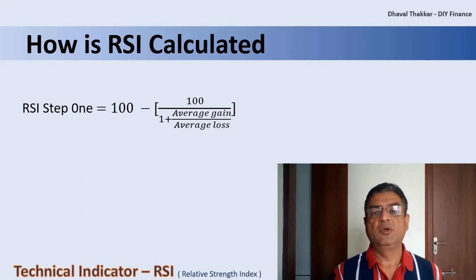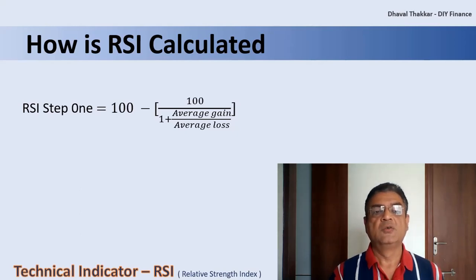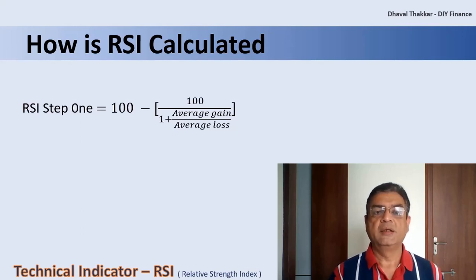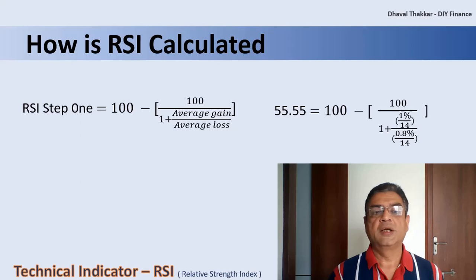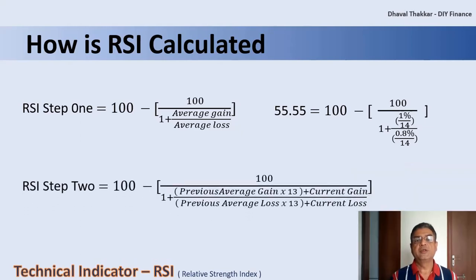The standard number of periods used to calculate the initial RSI value is 14. For example, imagine the market closed higher 7 out of the past 14 days with an average gain of 1%, and the remaining seven days all closed lower with an average loss of -0.8%. Once there are 14 periods of data available, the second calculation can be done, which smooths the result so that the RSI only nears 100 or 0 in a strongly trending market.